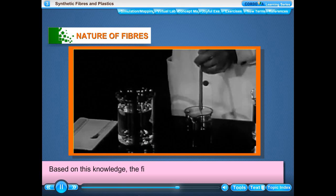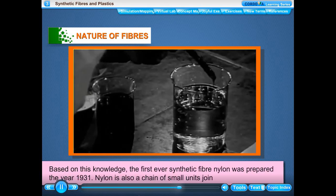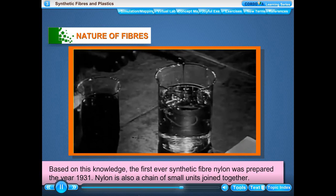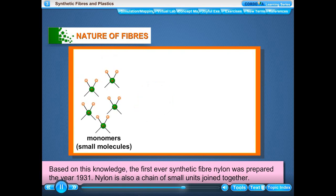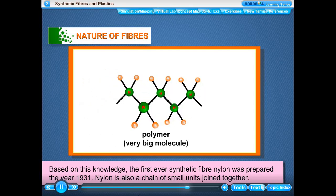Based on this knowledge, the first ever synthetic fiber, nylon, was prepared in the year 1931. Nylon is also a chain of small units joined together. Each small unit is actually a chemical substance produced in industries. A polymer is a very big molecule formed by the combination of a large number of small molecules called monomers, joined end to end by a chemical bond.